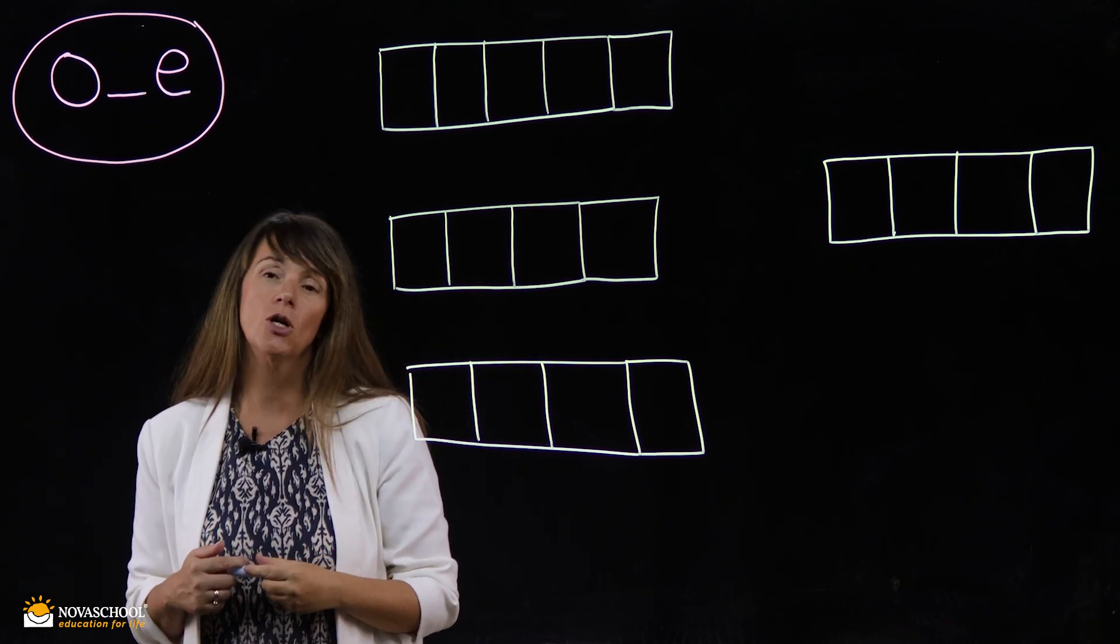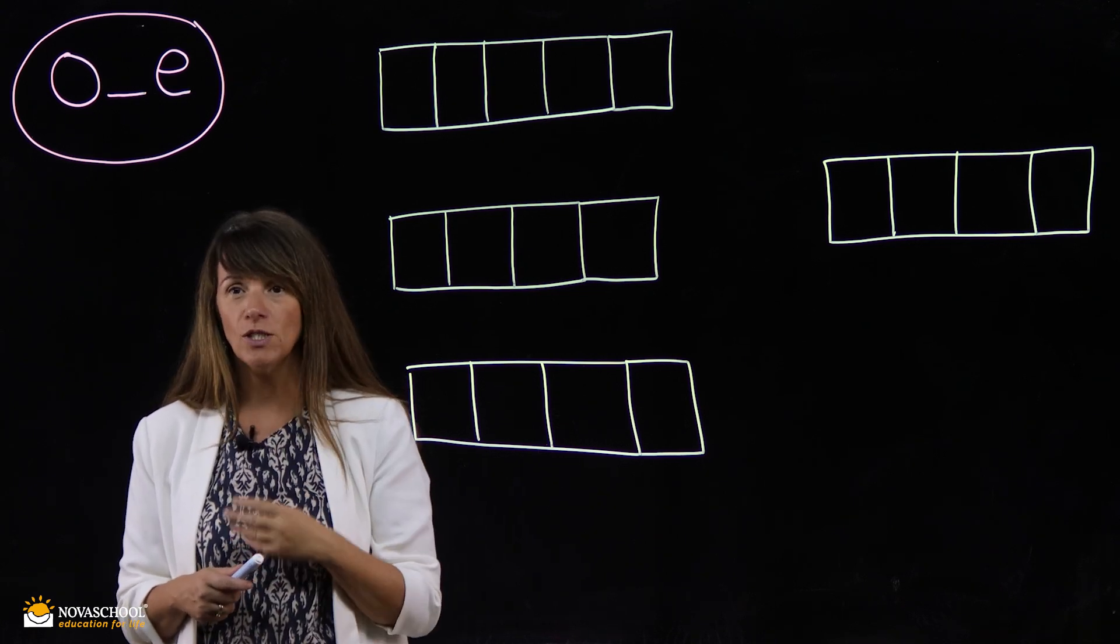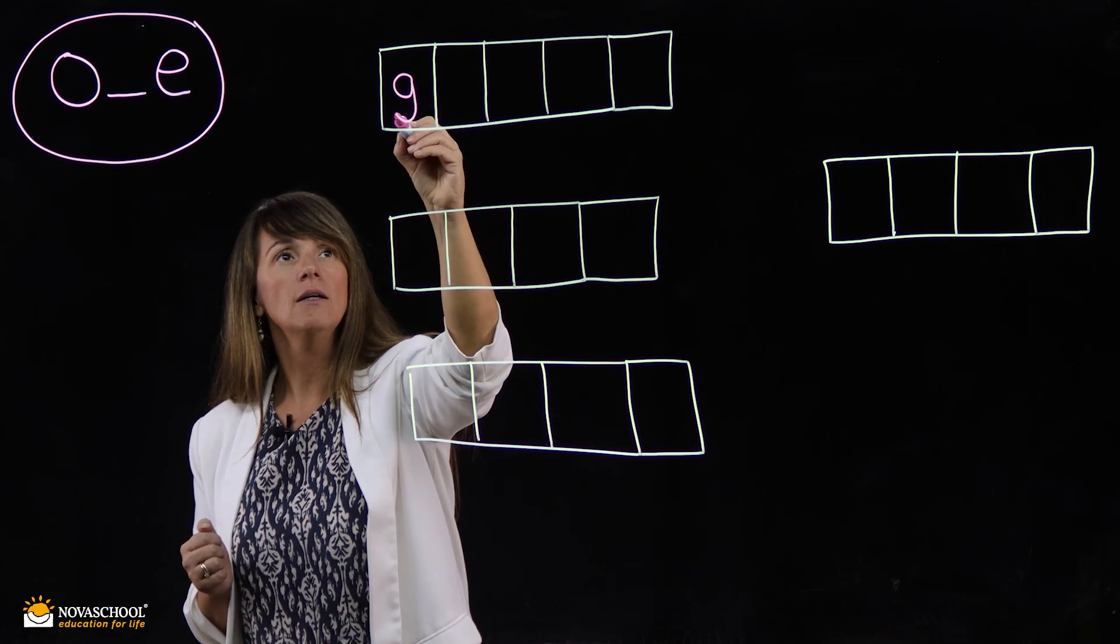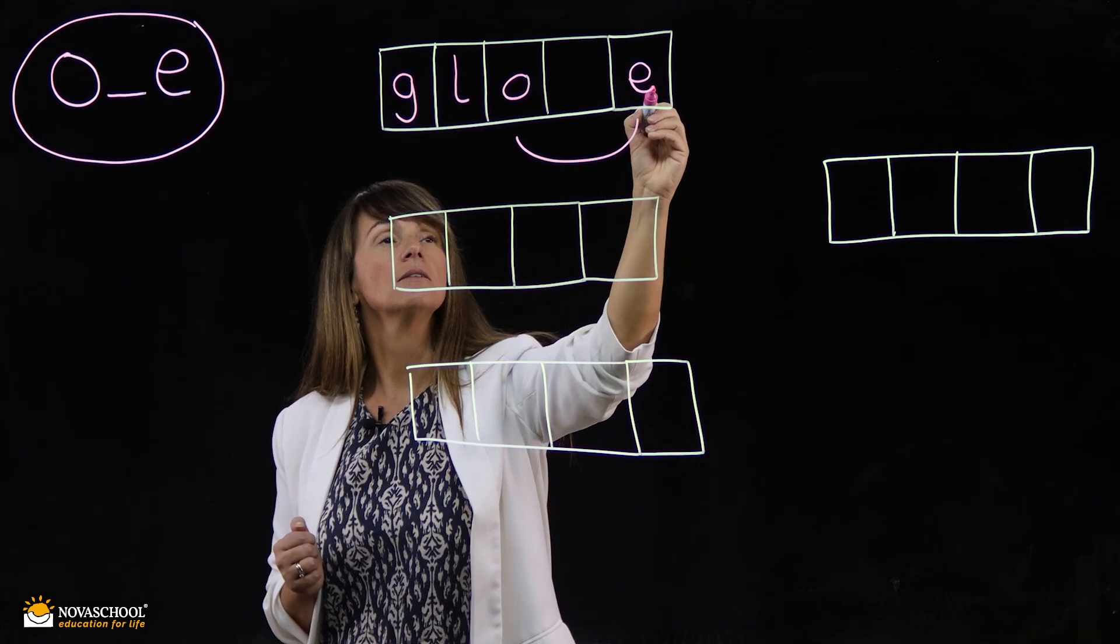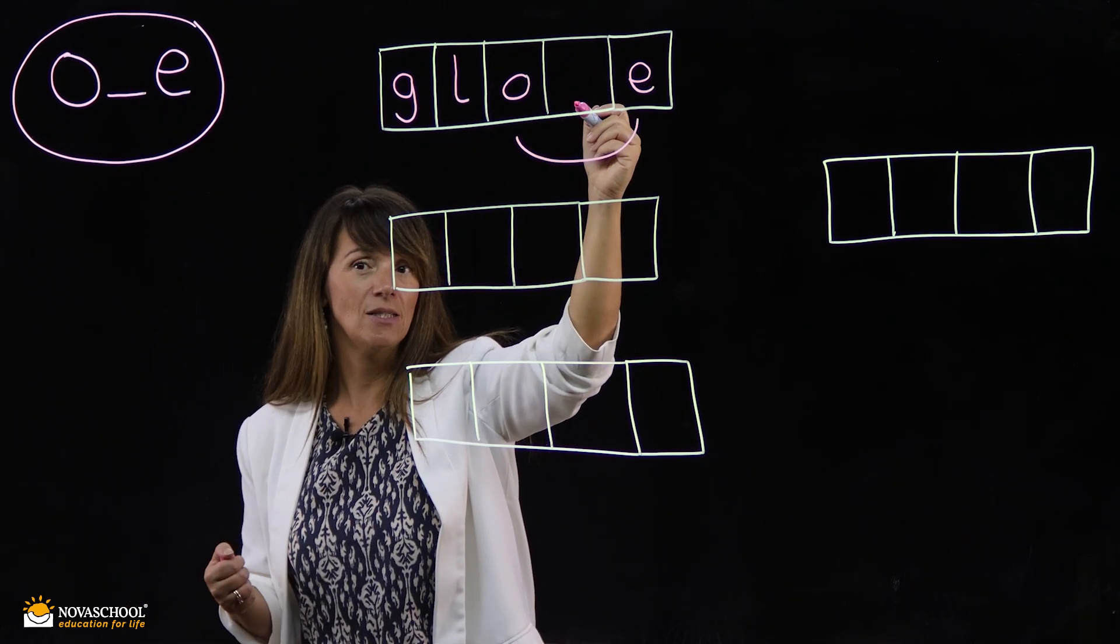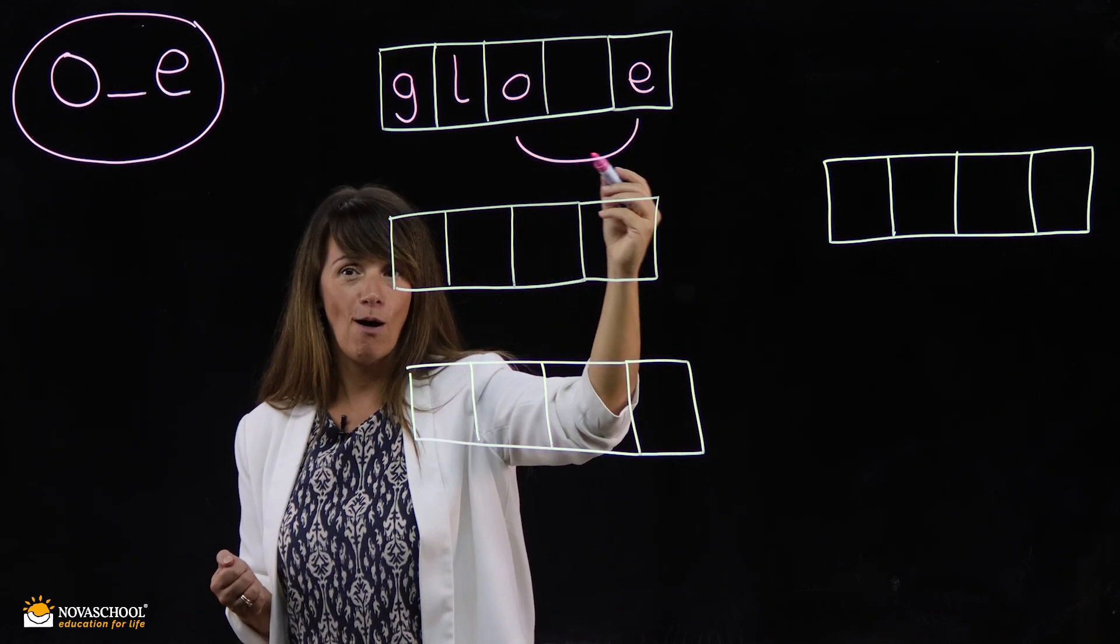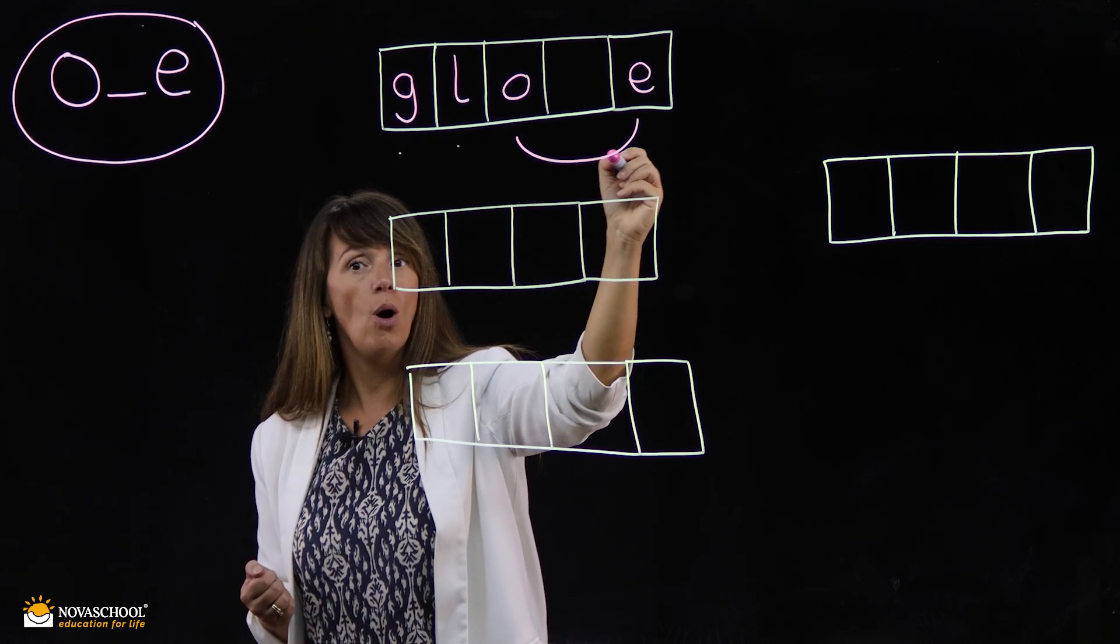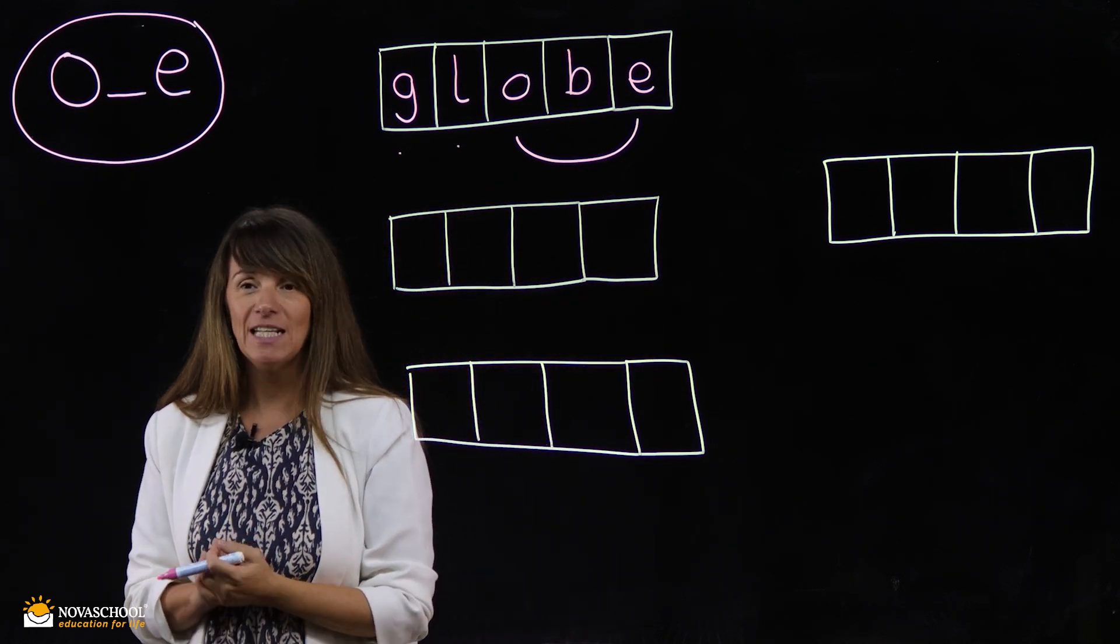Okay, we're going to sound out the word globe. Globe, ready? G, L, O, B. Four sounds, okay? Globe. But let's see why we need five boxes. G, L, O. Okay, you see how we've left a space? That's why I've got that line there. It tells us we need a letter in the middle. These two hold hands because they're besties, they're best friends, and they make the sound O. Okay, let's sound it out together and blend. G, L, O, B. Globe. Okay, guys? Right, let's do another one.